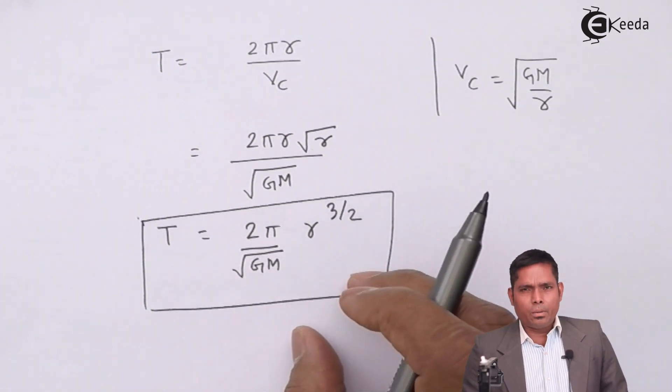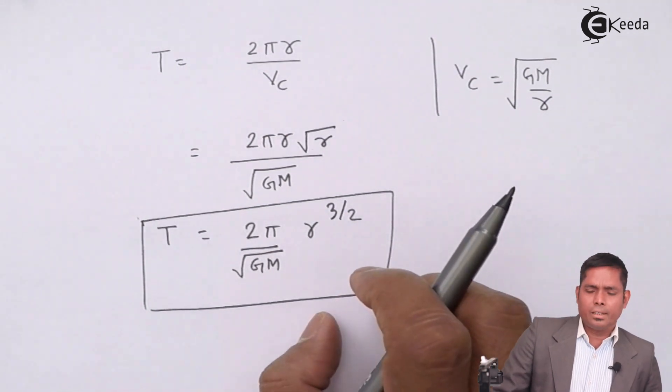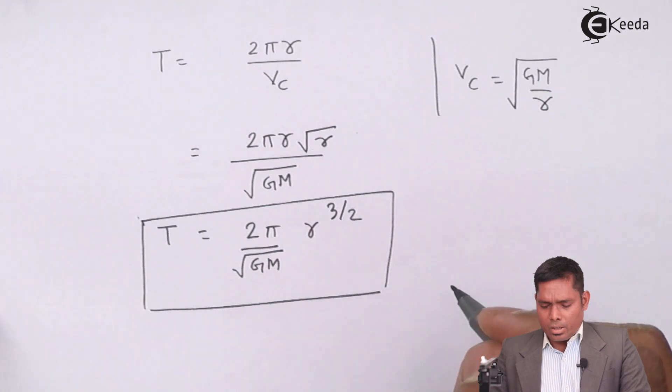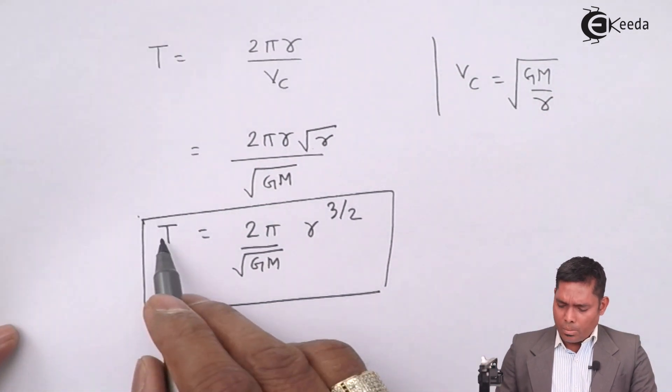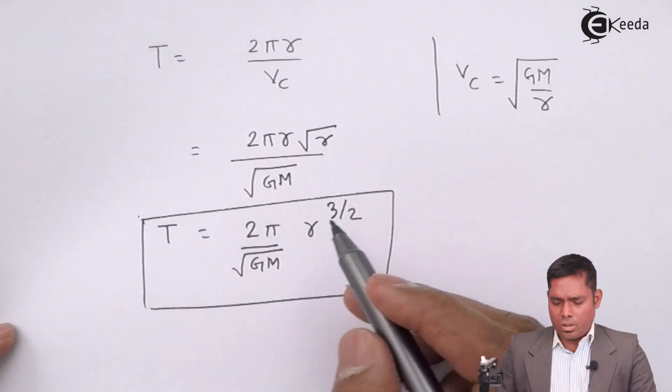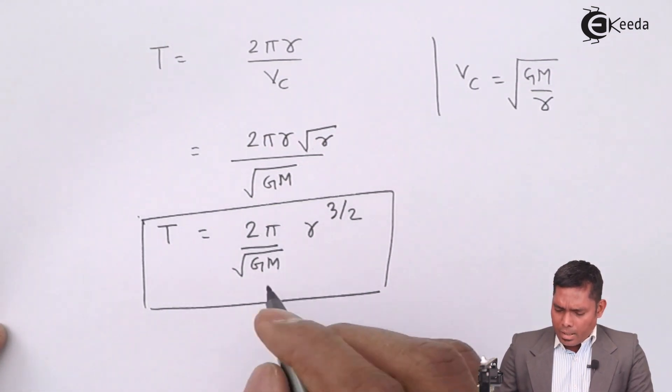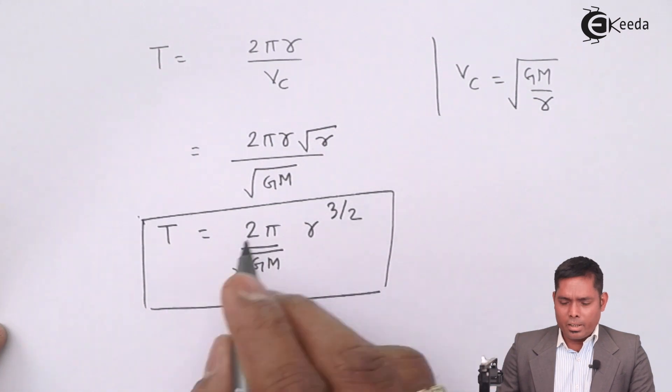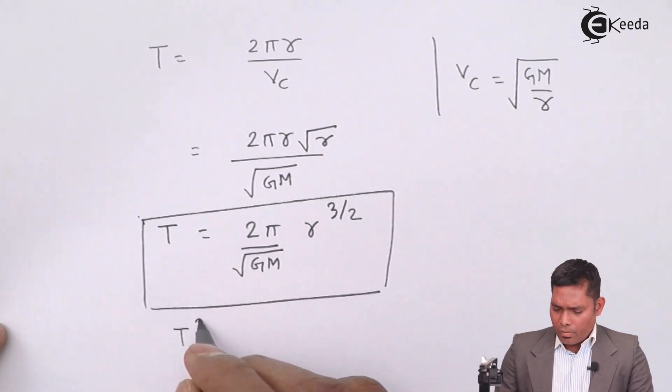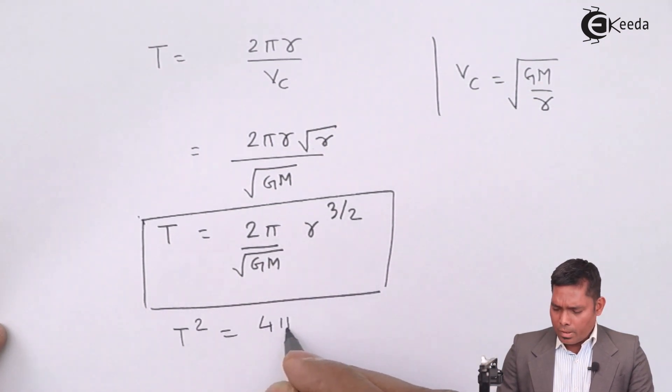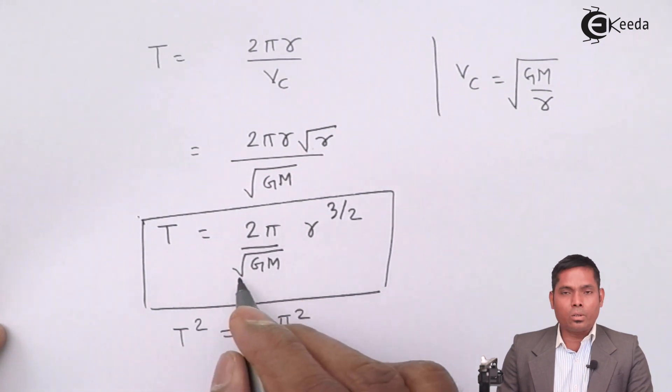But then we have to simplify this and write how this T depends on what factors. If I write squaring both sides of the equation, I will have T square equals to 4 pi square divided by only gm will be there, under root is over.